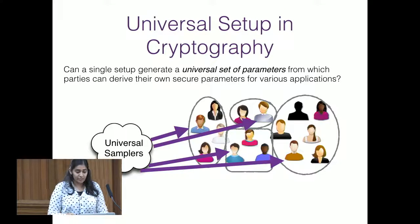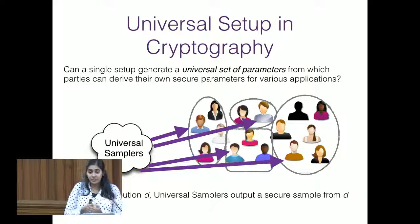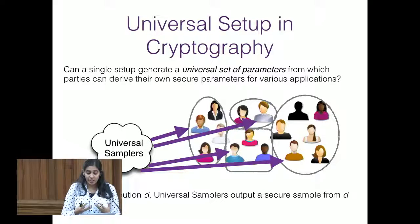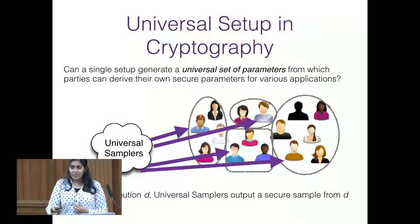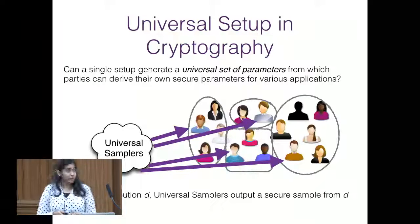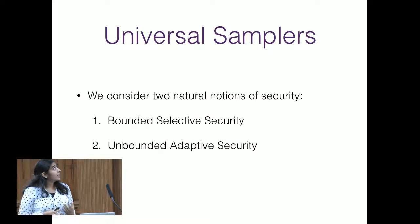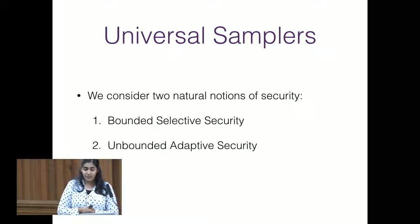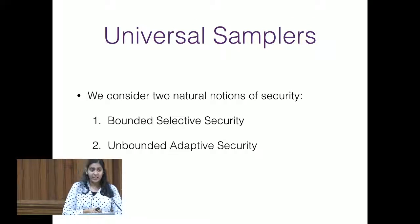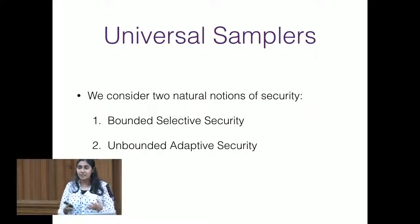The idea of a universal sampler is that on input some distribution D, it outputs a securely generated sample from D — meaning it generates a sample without having to reveal the randomness used for sampling. For universal samplers we consider two natural notions of security: the first is bounded selective security, and the second is unbounded security even when the distributions to be sampled from are chosen adaptively.